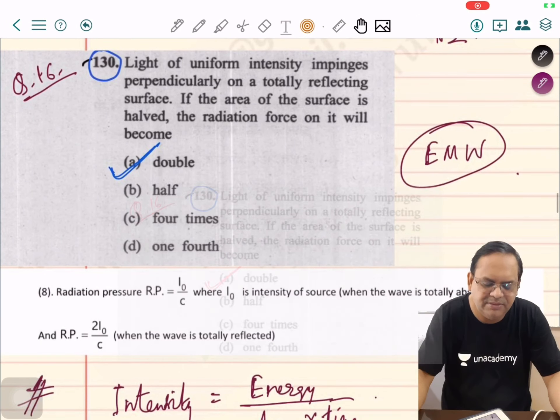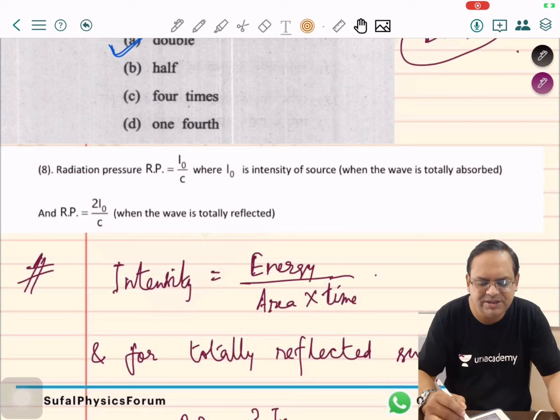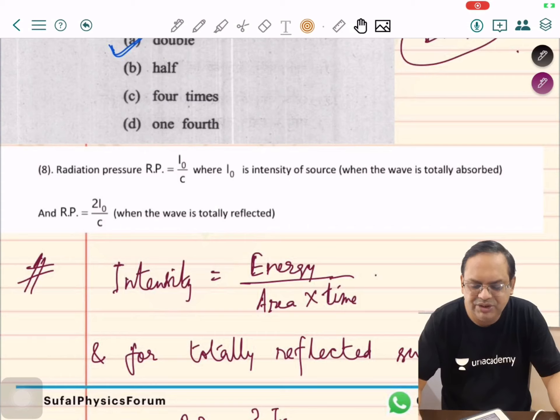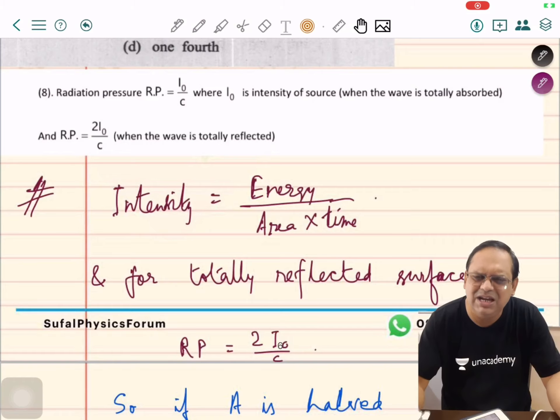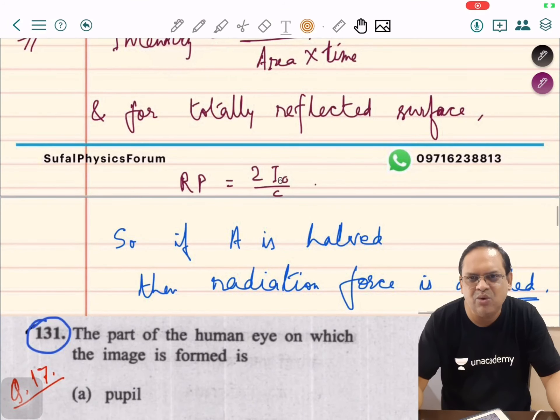Question number 16, from EM waves. Light of uniform intensity impinges perpendicularly on a totally reflecting surface. If the area of the surface is halved, the radiation force on it will be: radiation pressure Rp equals I0 by C when the wave is totally absorbed. When totally reflected, it's twice I0 upon C. Intensity is energy per unit time per unit area. If A is halved, then radiation force will be doubled.